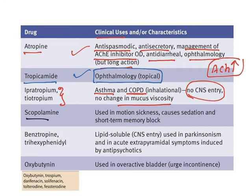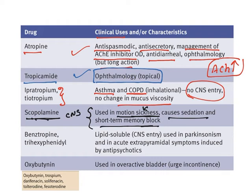Scopolamine is used in motion sickness. When people travel in trains and buses they experience vomiting sensation — that is motion sickness — which can be treated by scopolamine because of its CNS activity. It causes sedation and short-term memory block, a kind of amnesia. Benzotropine and trihexyphenidyl are also CNS drugs used to treat Parkinsonism and acute extrapyramidal symptoms.